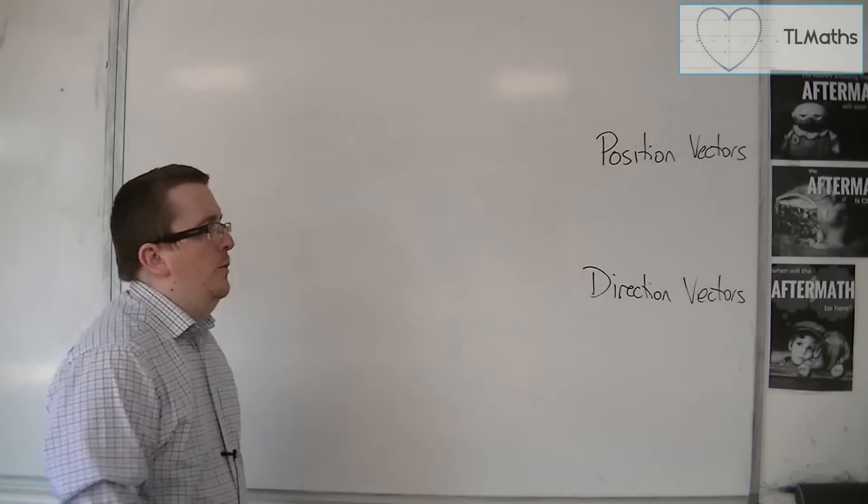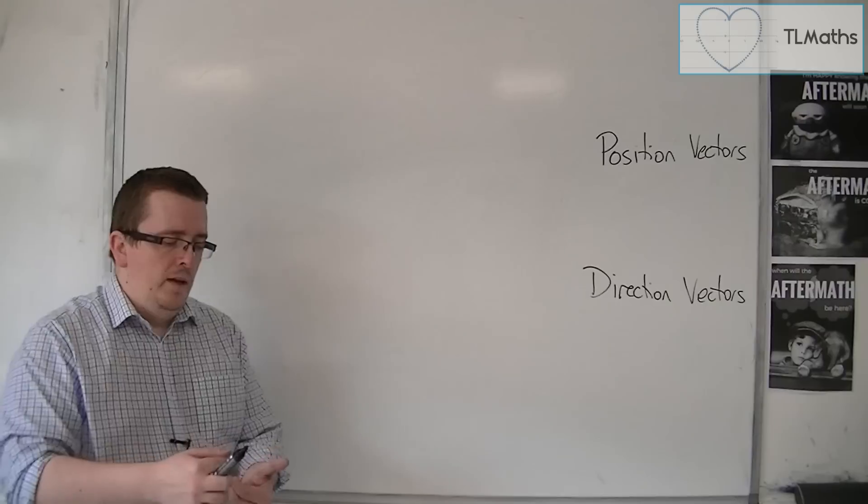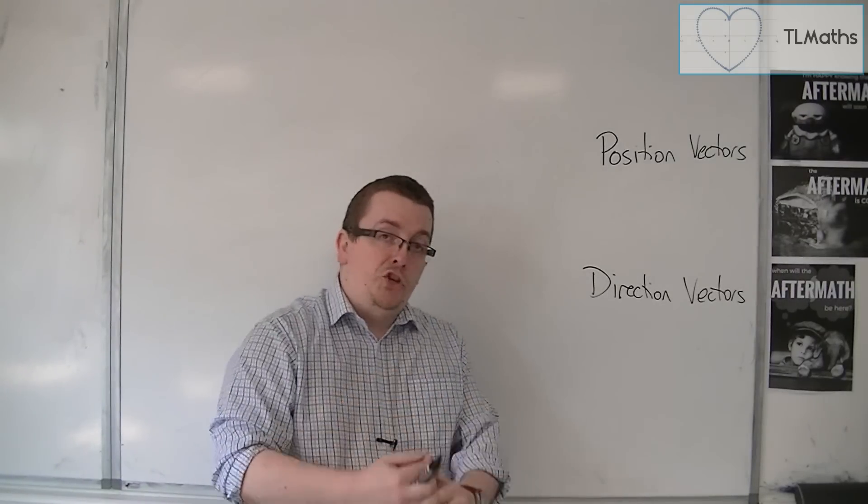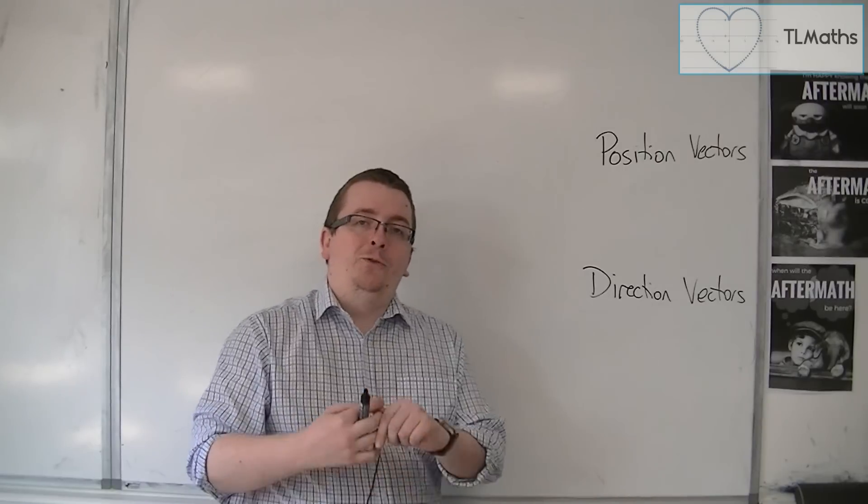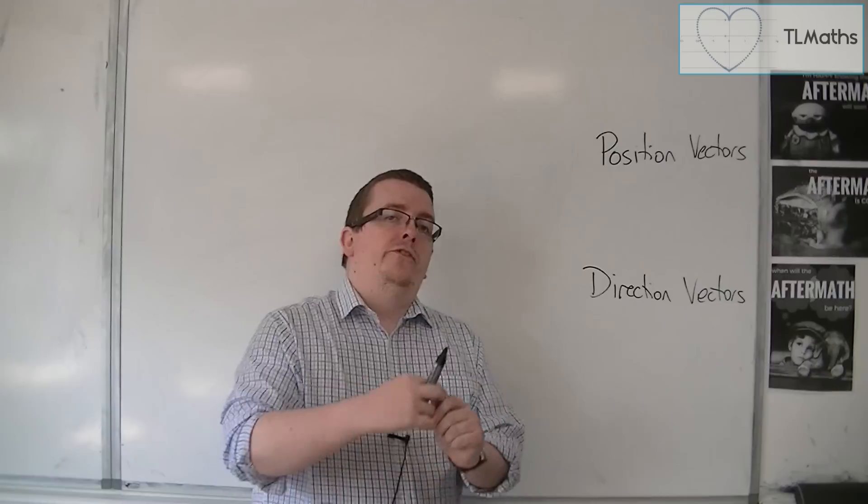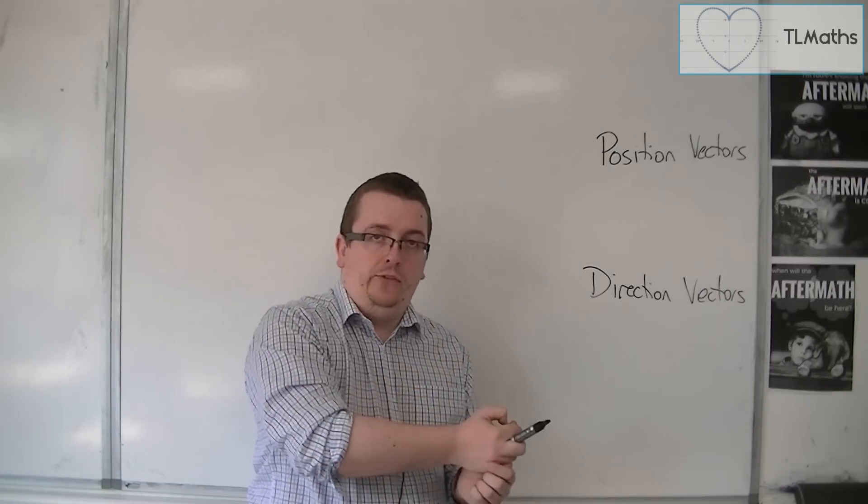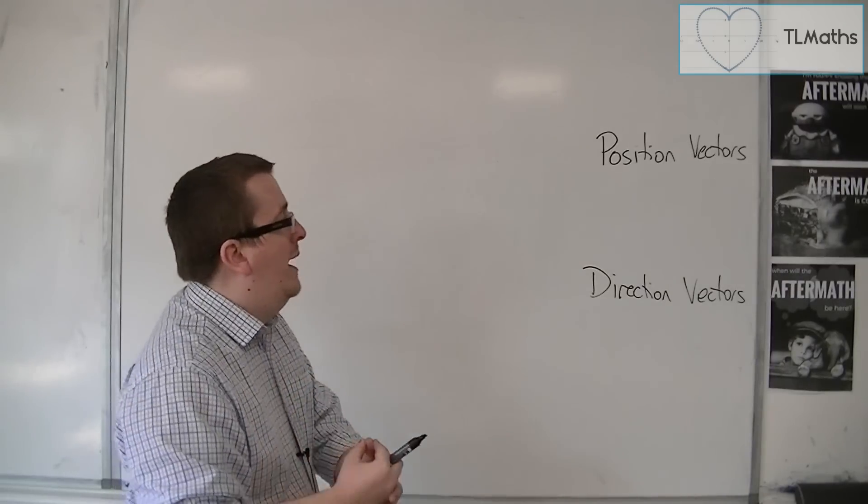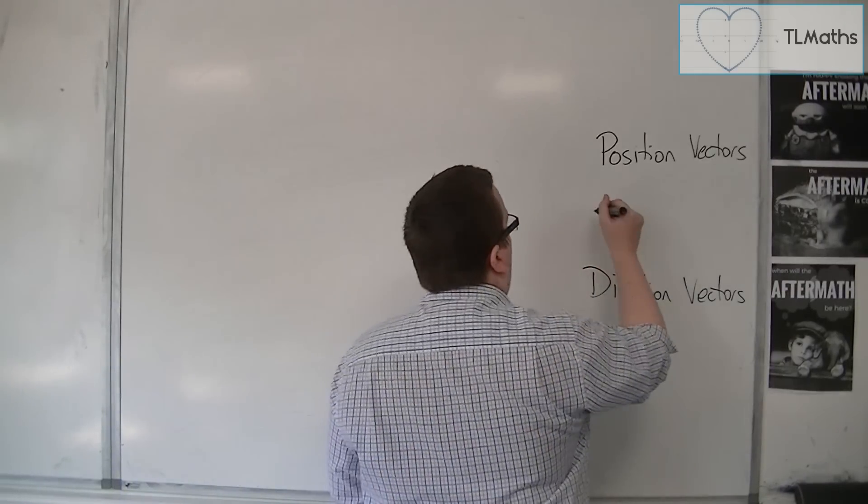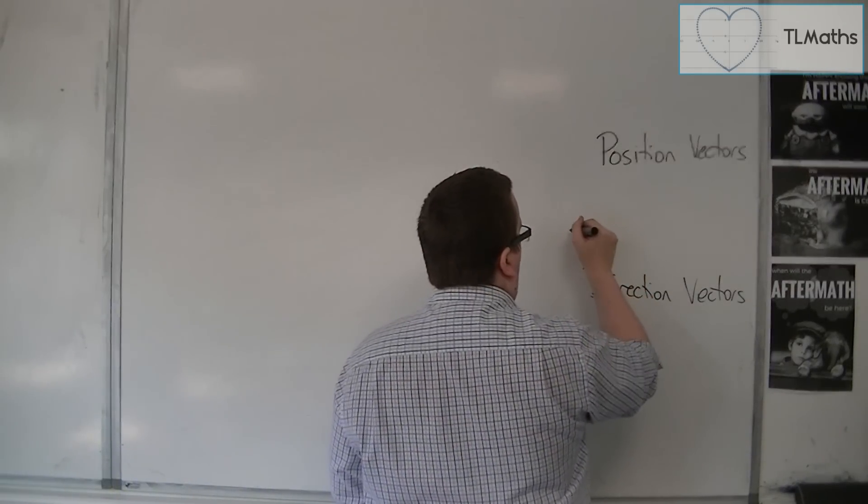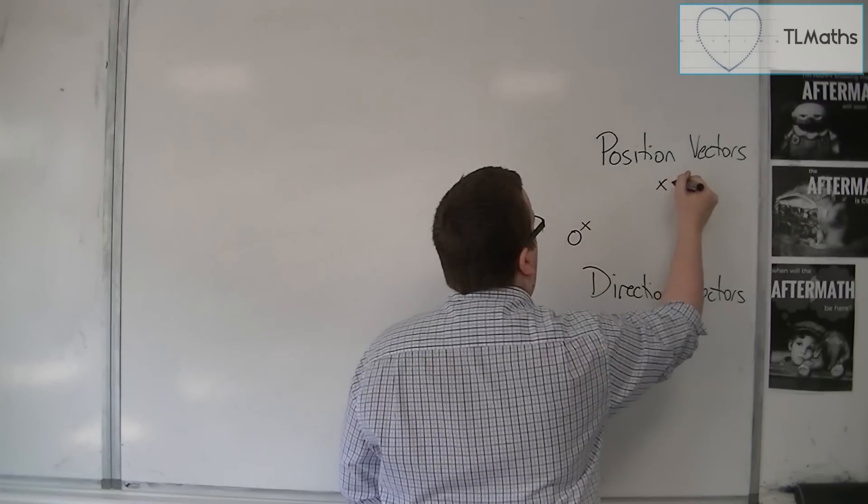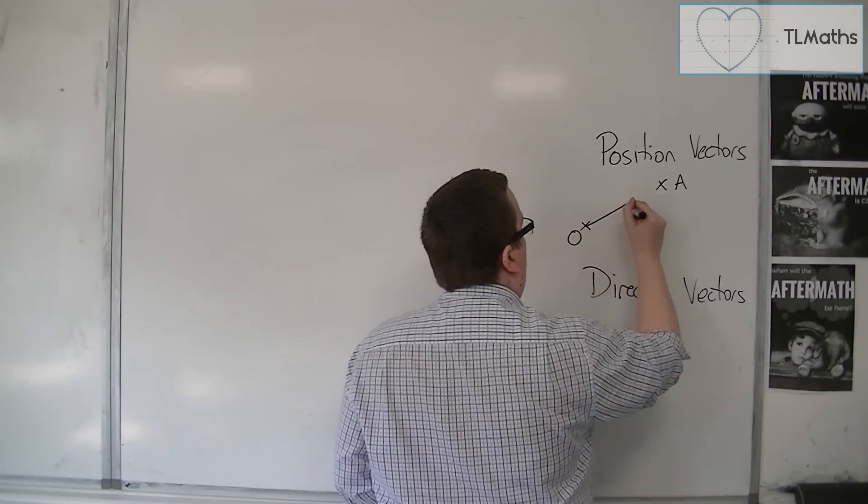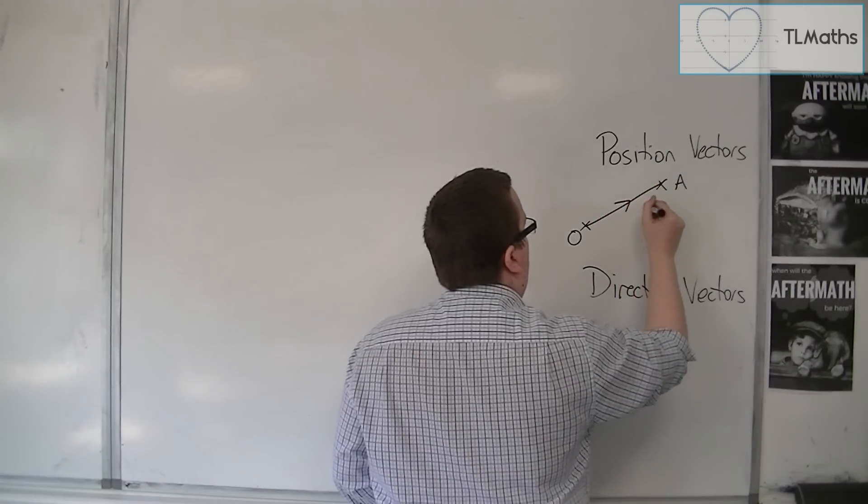So firstly, as we've said in a previous video, a position vector tells you how to get from the origin to a point in 3D space, or 2D if you're working 2D. So if you had the origin O and you had the coordinate A, then a position vector is OA.